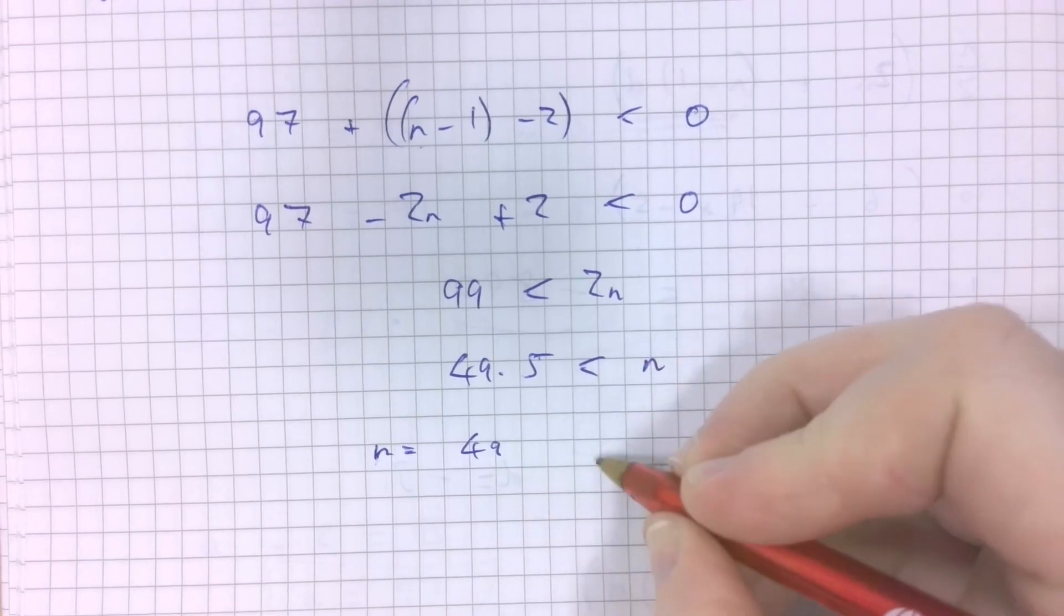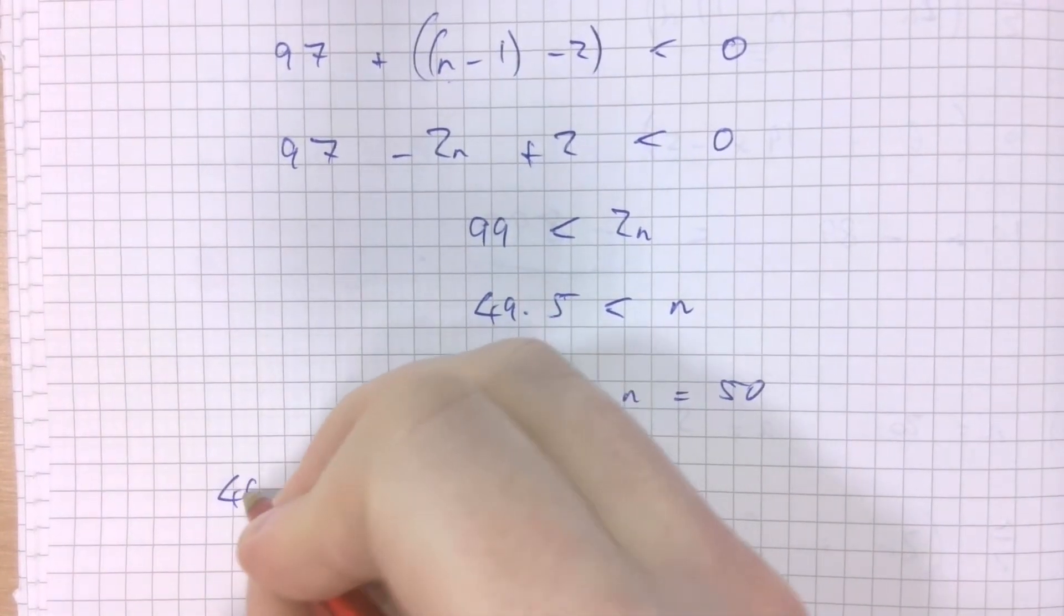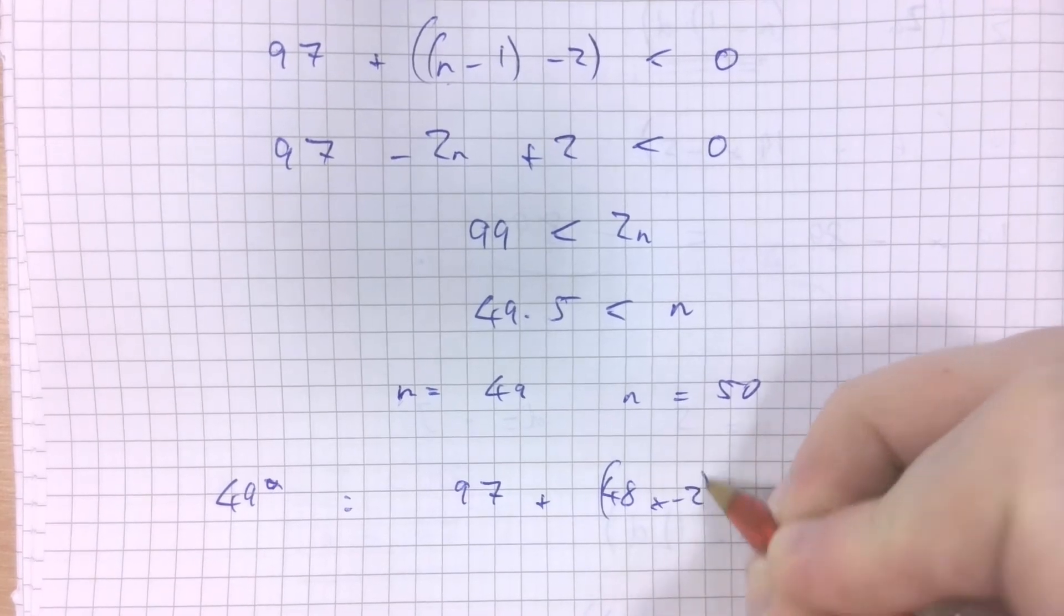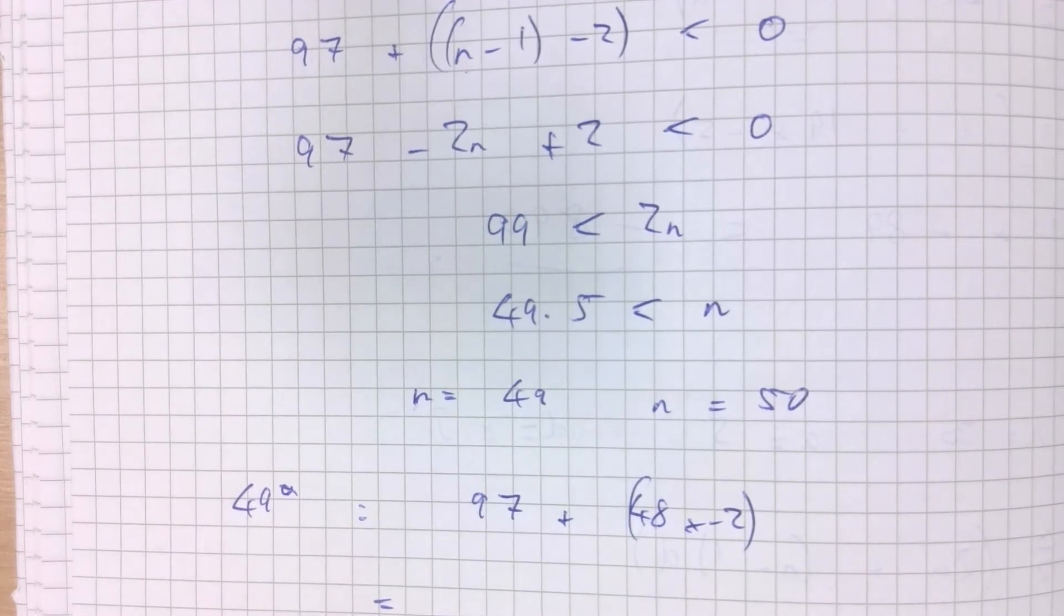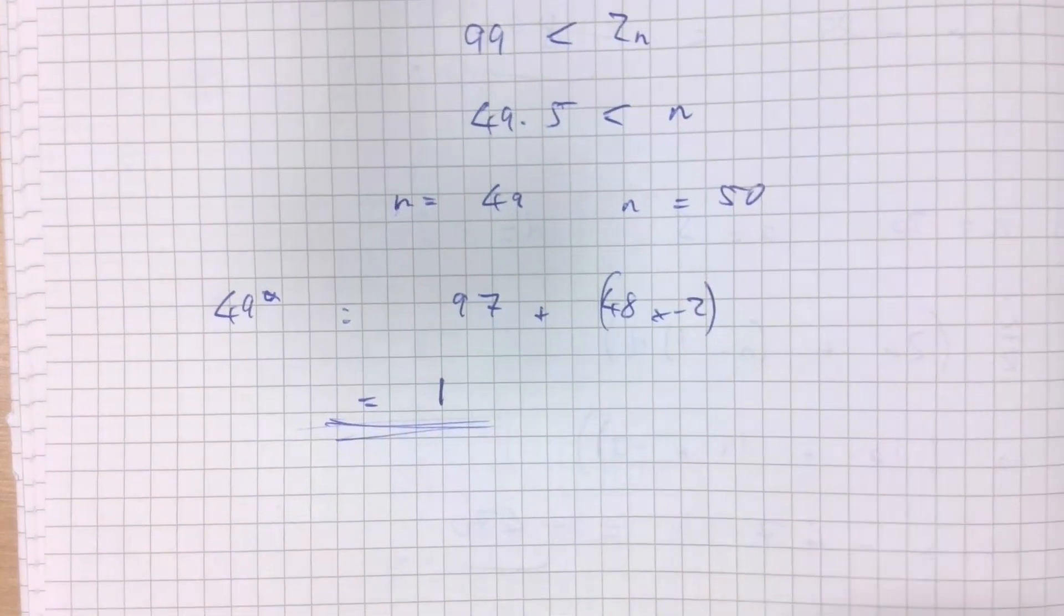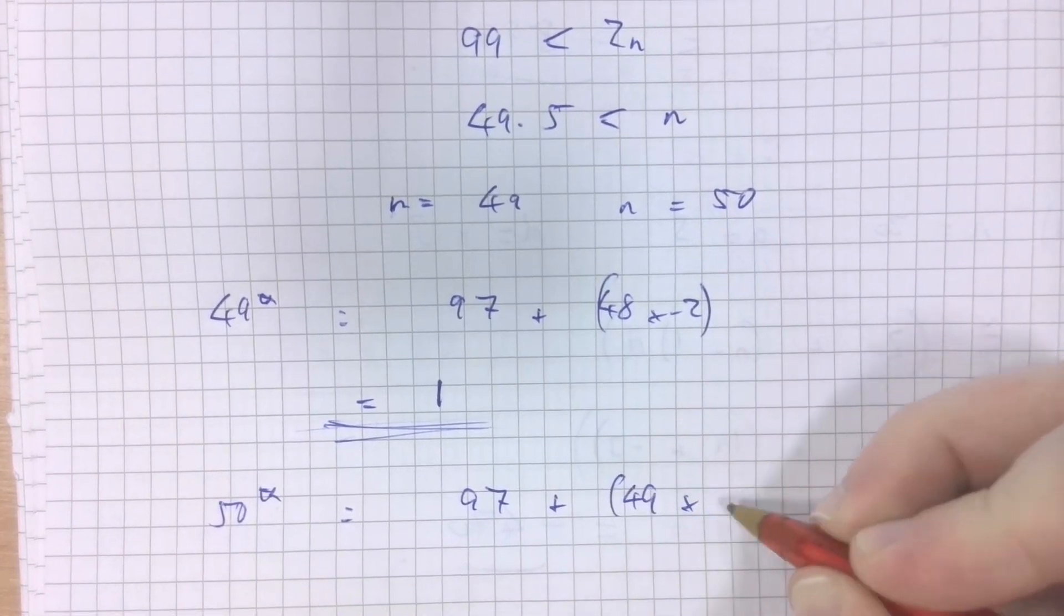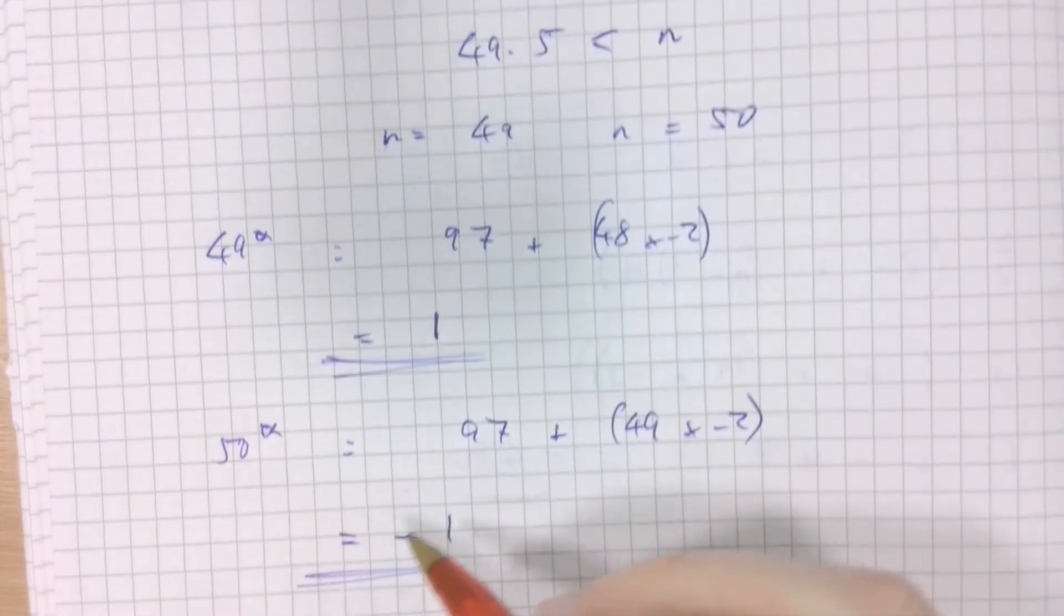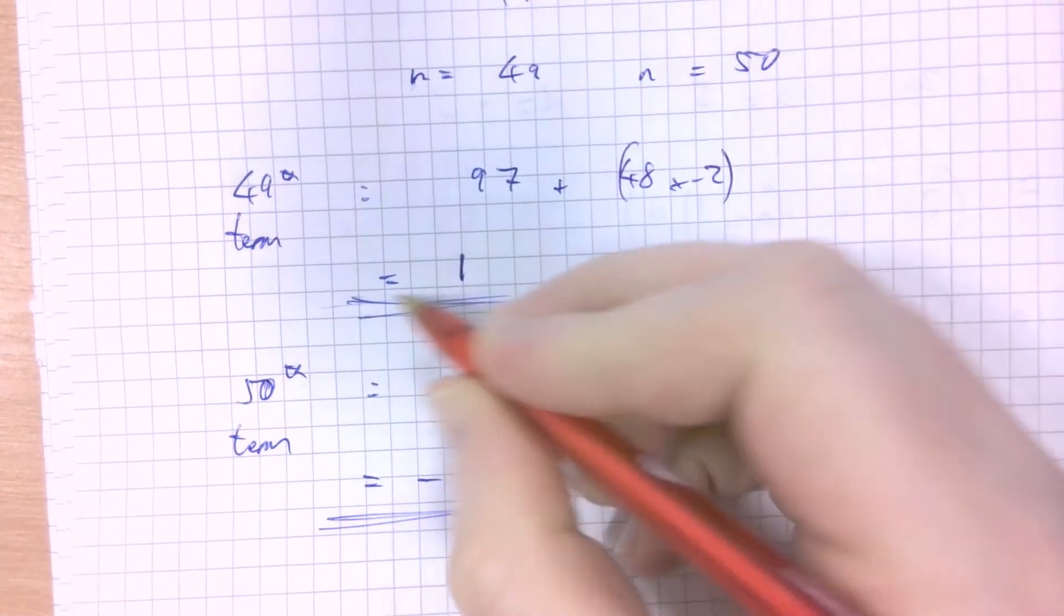Clearly some key values are n equals 49 and n equals 50. What's the 49th term of this sequence? What's the 50th term of this sequence? Well, the 49th term is 97 plus 48 times negative 2. That happens to be 1. So the 49th term of this series is 1. What about the 50th? 97 plus 49 times negative 2. That's negative 1. So the 50th term of this series is negative 1, and the 49th term is 1.